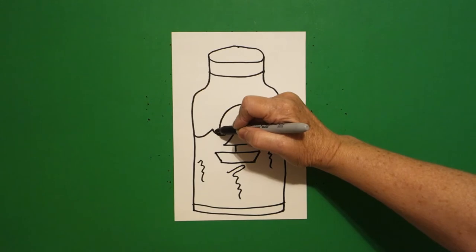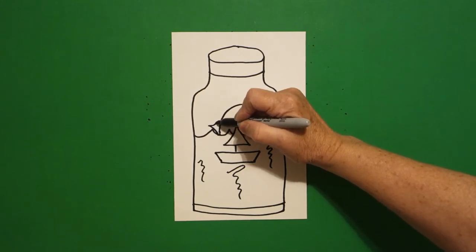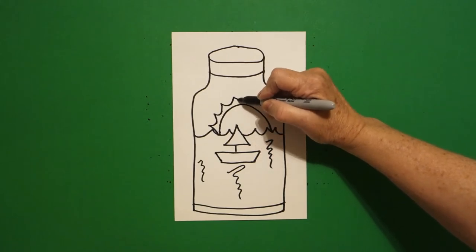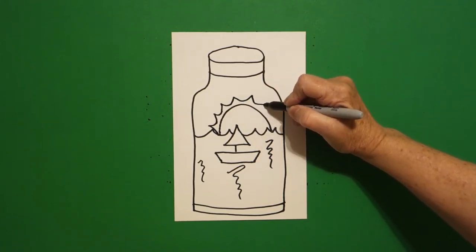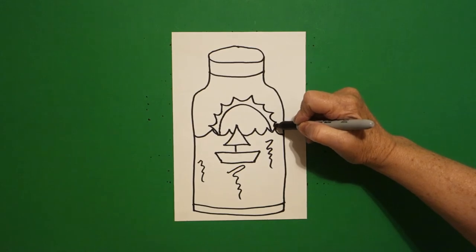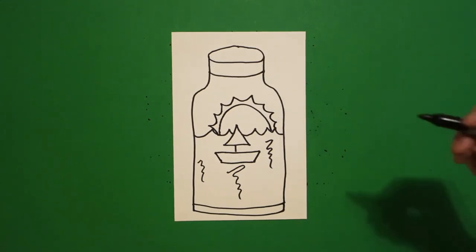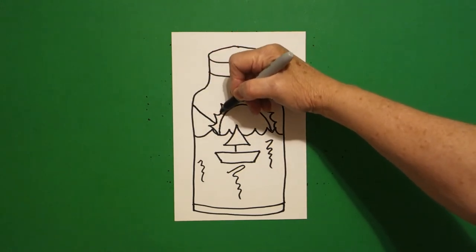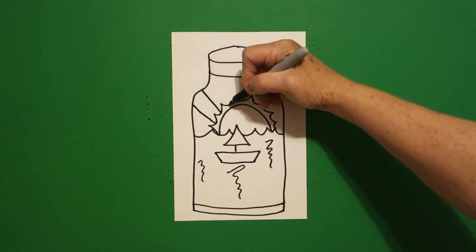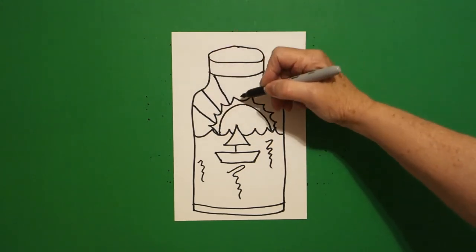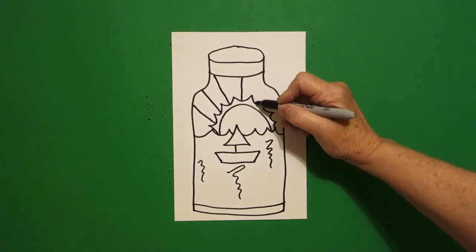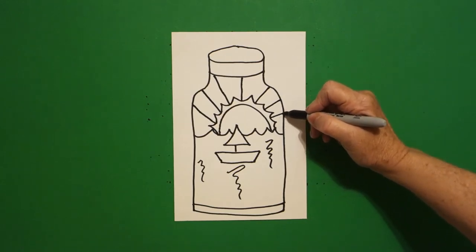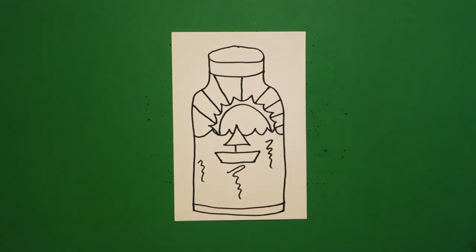Starting on the left, we're just going to draw a curved line out, in, out, in, up, down, out, in, up, down, out, in, keep going, and connect. From every section, we're going to draw a straight line in between to the edge of our jar, keep going, keep going, keep going, there we go.